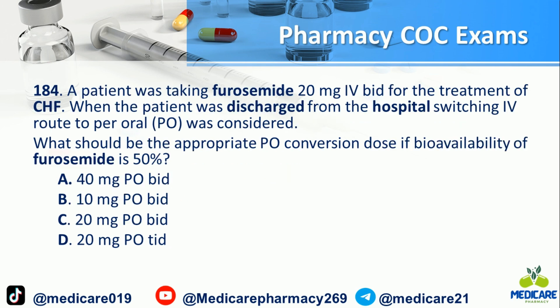Number 184: A patient was taking furosemide 20 mg IV BID for the treatment of CHF. When the patient was discharged from the hospital, switching from IV to oral route was considered. What should be the appropriate oral conversion dose if bioavailability of furosemide is 50%? A) 40 mg oral BID.